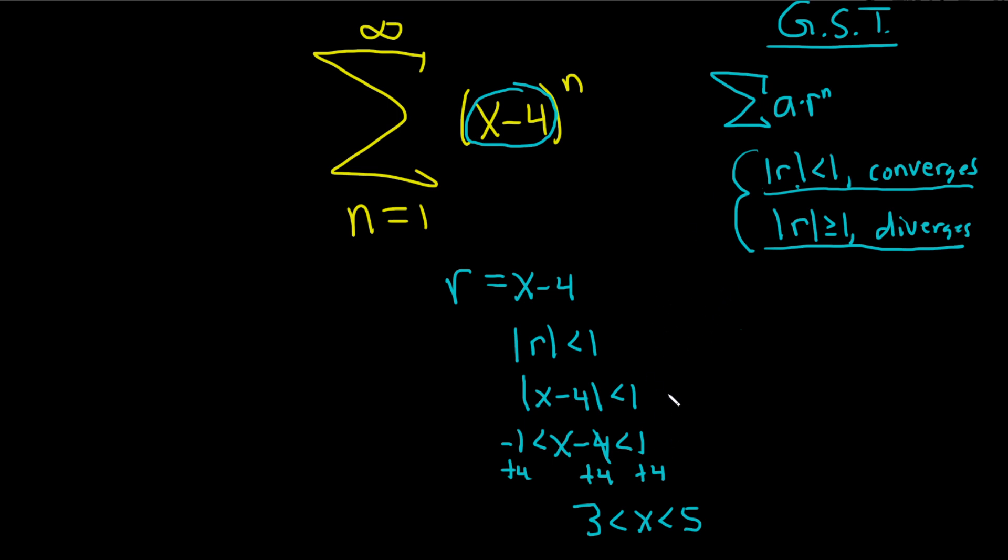Let's write it in interval notation. Because we have strict inequalities, we will use parentheses, so this is 3 comma 5. These would be the values of x for which the series converges. If you've studied more infinite series, you know this goes by another name. This is also called the interval of convergence.